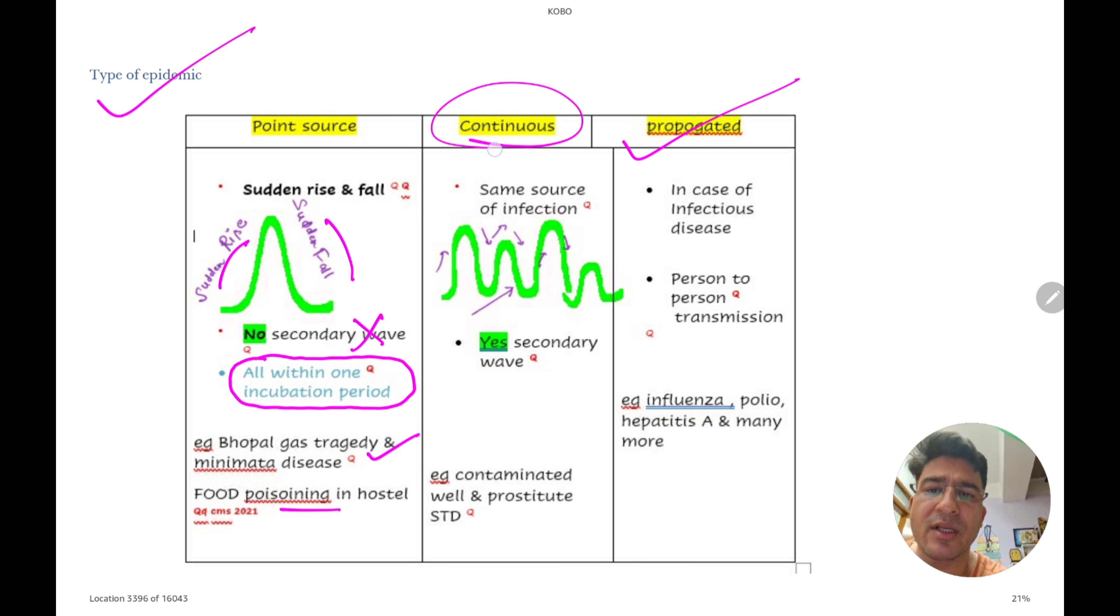Continuous ka kya matlab hota hai? Continuous ka matlab hota hai ki same source of infection hai. Secondary wave aapko mil egi. Jaise contaminated well hai. Koi kua hai, woh infected ho gaya hai. To lagatar usse, jo bhi us mein nahane ja raha hai, us ko infection ho raha hai. To lambe time tak chalti rehti hai problem. Jaise prostitute. Kisi ko koi STD hai. Kisi insaan ko, uske through fail raha hai. So this is continuous.